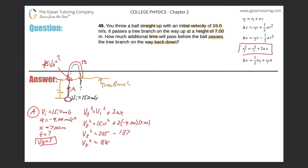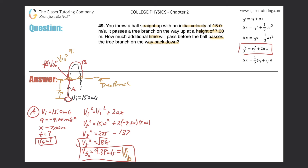Taking the square root: the final velocity of Part A is √88 = 9.38 meters per second. This is also equal to the initial velocity of Part B — that's how the two frames are connected. So v_f(A) = v_i(B) = 9.38 m/s.